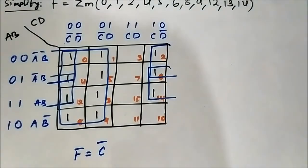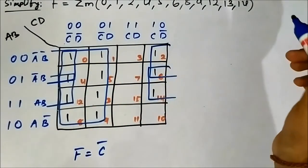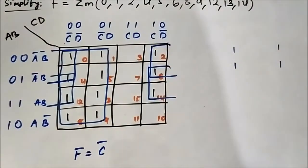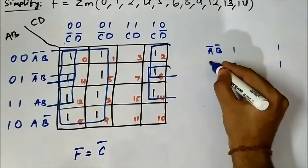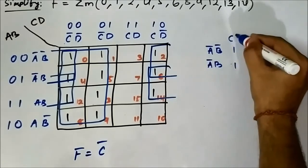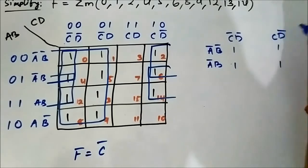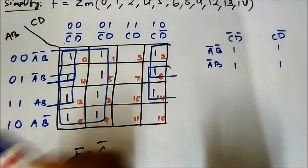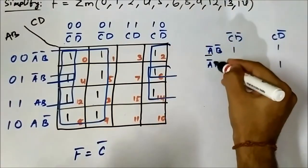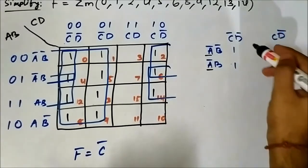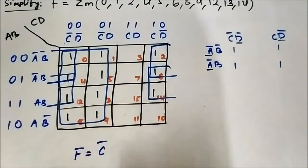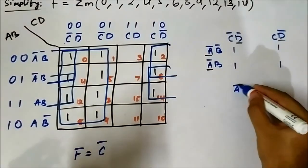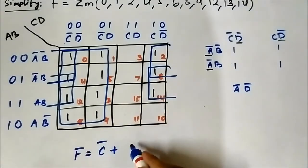First let us take the quad involving cells 0, 2, 4, and 6. The horizontal components are ĀB and AB, and the vertical components are C̄D̄ and CD̄. In the horizontal side we have Ā bar common, and in the vertical side we have D̄ common. So ĀD̄ will be part of the simplified boolean expression.